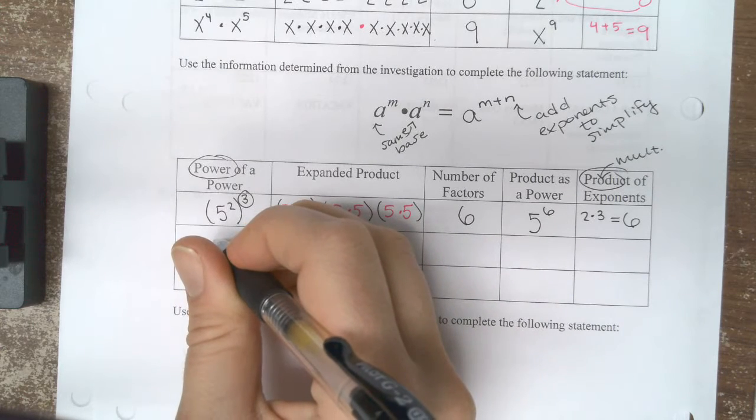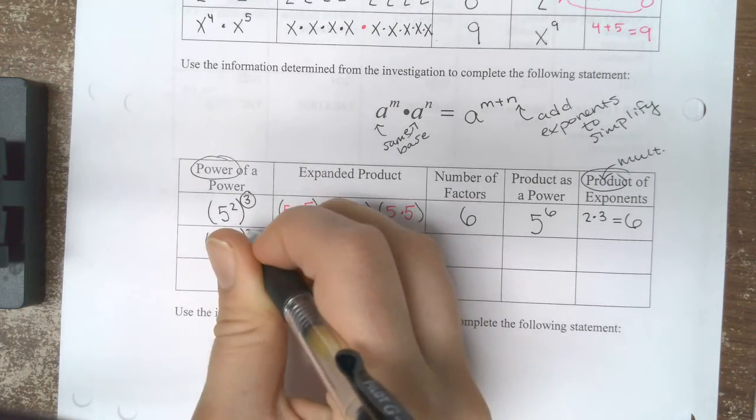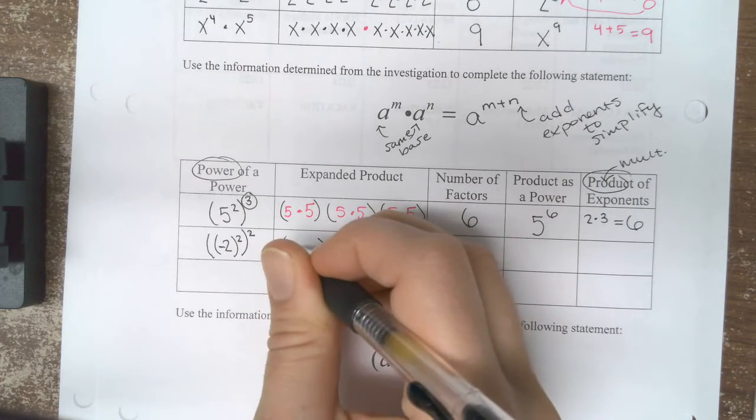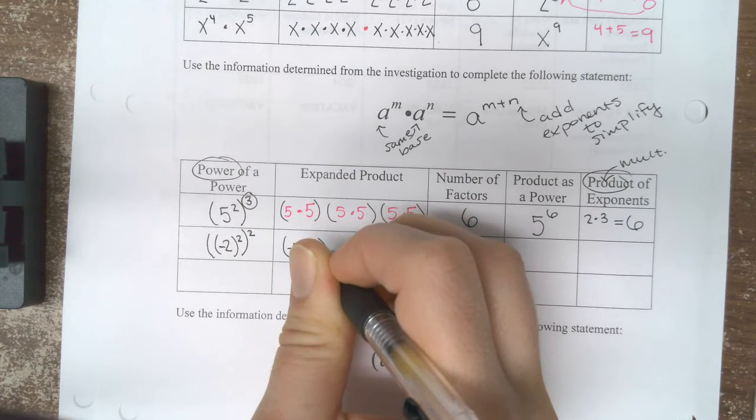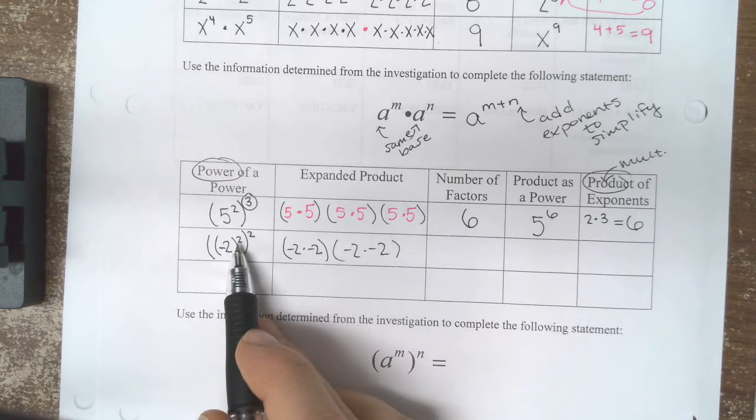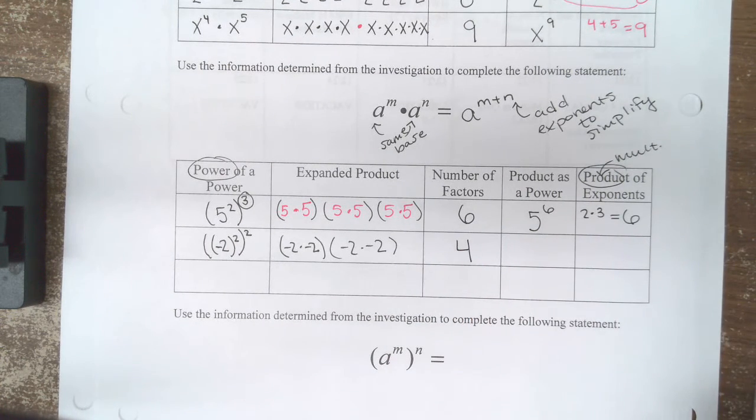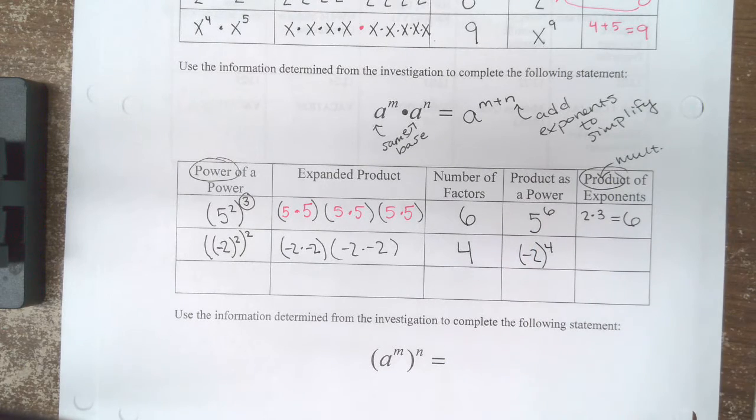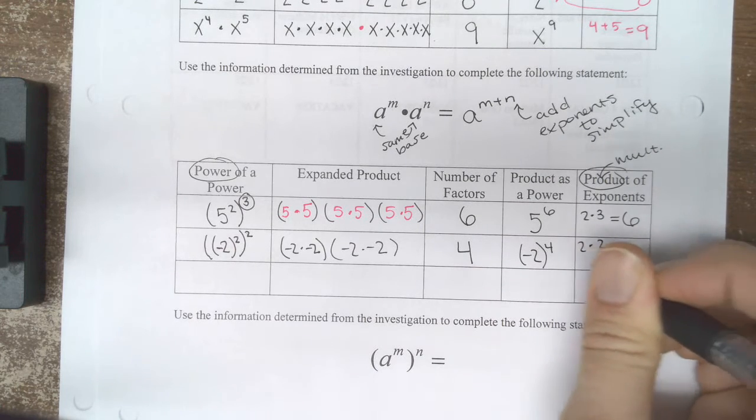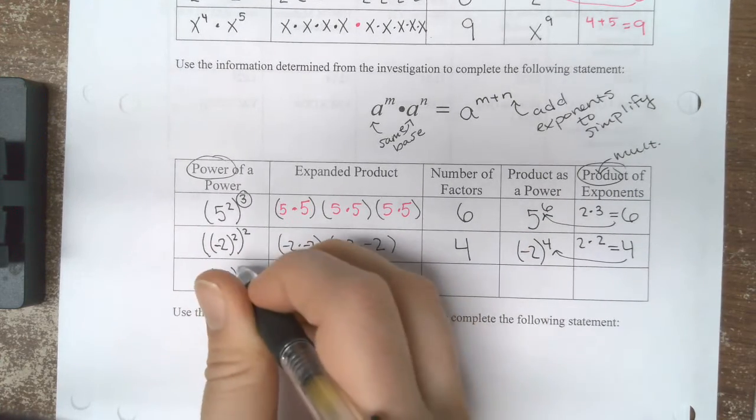Another example. If I had 2 squared squared, I'll make that a negative 2. Then I have inside that parenthesis negative 2 times negative 2, and I have that twice. I have negative 2 squared twice, or I have four factors of negative 2. I have negative 2 to the 4th. If I multiply my exponents, 2 times 2 gives me 4.